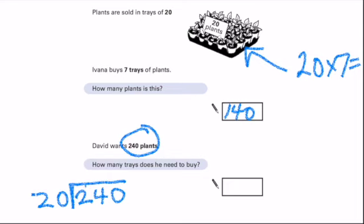So, 20 goes into 20, carry the 2. 20 goes into 24 once, with 4 left over. And 20 goes into 40, 2. So he needs 12 trays, because 12 times 20 is 240.